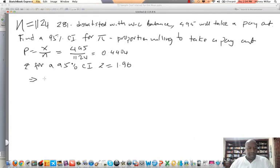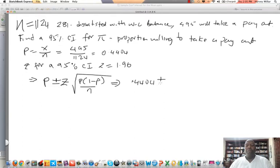So we're looking at p plus or minus the critical value, which is z in this case, times the square root of p(1 minus p) over n. So we need to substitute our values now, 0.4404 plus or minus 1.96 into square root of 0.4404 and 1 minus 0.4404. So we need this to be a lot longer, divided by 1124.